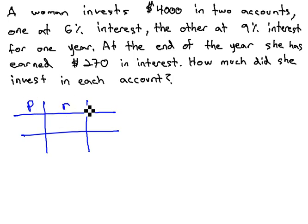times the rate it's invested at, which is always written as a decimal, will equal the amount of interest earned in the account in one year.